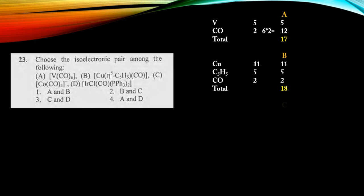For C, cobalt is 3d⁷4s², so 9 electrons. For carbonyl, there are 4, so 8 electrons. There is a minus charge on the complex, so that's also a contribution. So 9 plus 1 plus 8 equals 18 electrons.